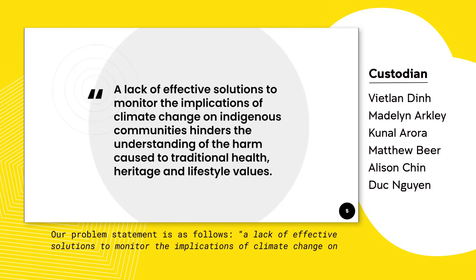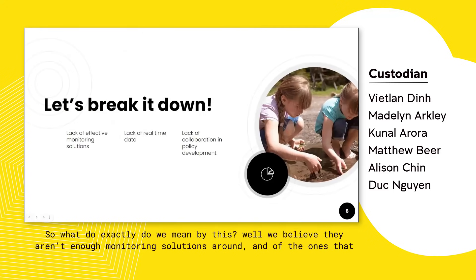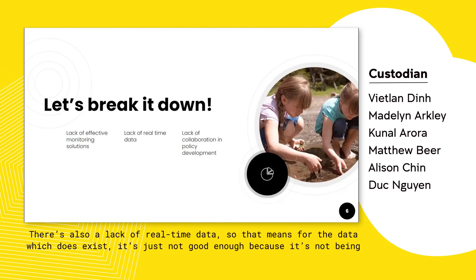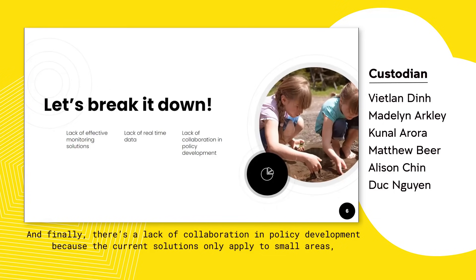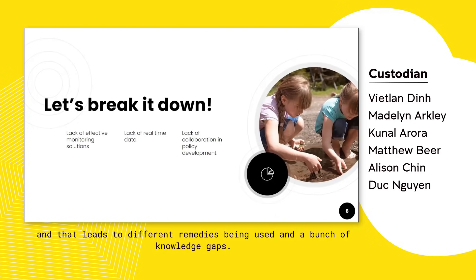Our problem statement is as follows: a lack of effective solutions to monitor the implications of climate change on Indigenous communities hinders the understanding of the harm caused to Indigenous heritage, health and lifestyle values. We believe there aren't enough monitoring solutions, and the ones that do exist don't provide the necessary data for decision-making. There's also a lack of real-time data — it's not being gathered or transmitted quickly enough to the people that need it. Finally, there's a lack of collaboration in policy development because current solutions only apply to small areas, meaning there are information silos, with different findings spread throughout the country leading to different remedies and knowledge gaps.